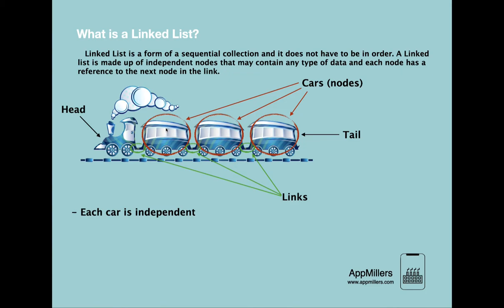Another feature is that we can enter any of these cars only in a sequential manner, which means that while the train is going we cannot jump from one compartment directly to another — we have to go through each compartment in order. This is the same in the linked list: if you want to reach the last node, you have to traverse through all nodes to reach it.